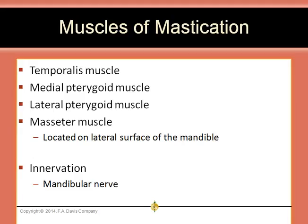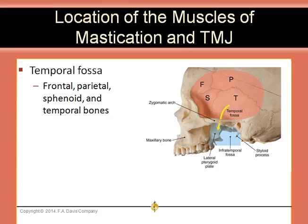The muscles of mastication are the temporalis, medial and lateral pterygoids, and the masseter. They are all innervated by the mandibular nerve. The temporal fossa contains the temporalis muscle. The infratemporal fossa contains the medial and lateral pterygoid muscles and the temporomandibular joint. The masseter muscle is located on the lateral surface of the ramus of the mandible.